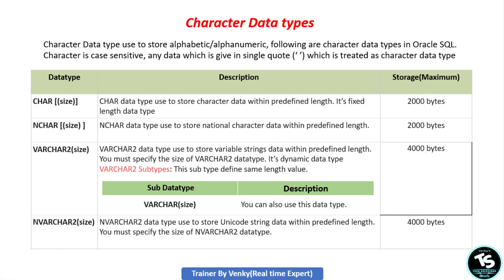What is a character data type? Character data type is used to store alphanumeric data. How does the Oracle server treat data as character? Whatever data you enter in single quotes while inserting — Oracle server treats it as character data type. These are the data types under character data types, and we will see them one by one. First, what is CHAR data type?